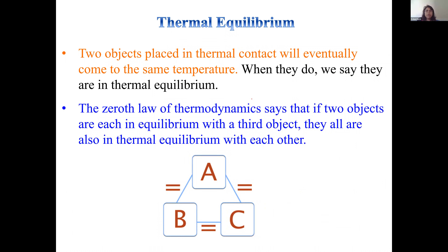Thermal equilibrium is a very important concept belonging to the zeroth law of thermodynamics. If you have multiple objects at different temperatures — say, object A at 100°, B at 50°, and C at 70° — and you combine them, they will reach a common equilibrium temperature. That shared temperature is the same for A, B, and C, and is called thermal equilibrium.